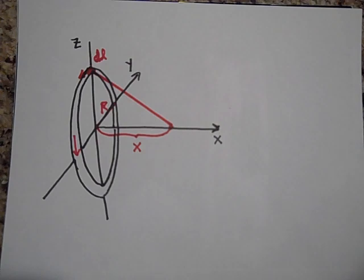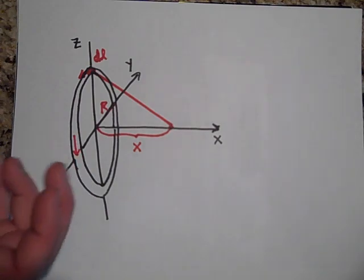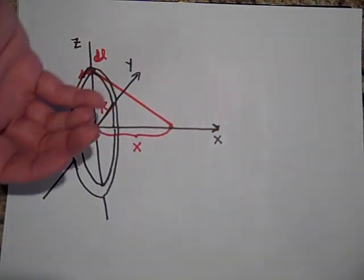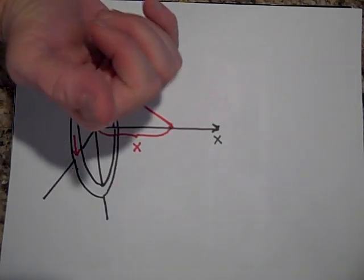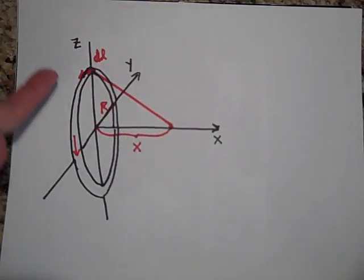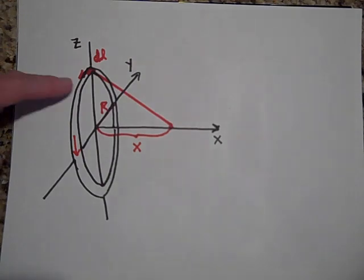And I'm going to tell you that the field just due to that DL. If you take your right hand and you put it in the direction of the current, and you curl your fingers, then it's going to be a circular field just due to DL. And it's going to point this way.